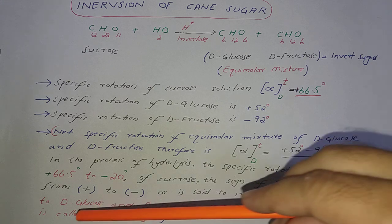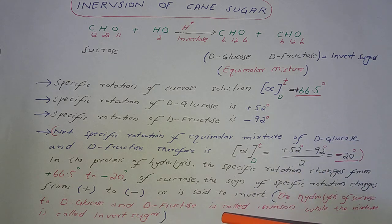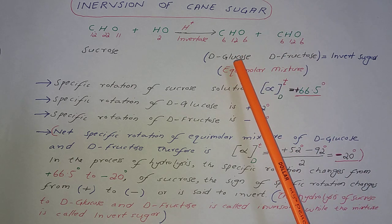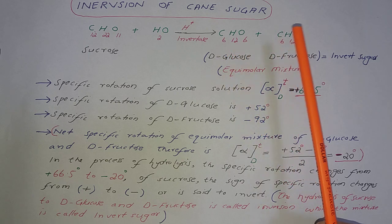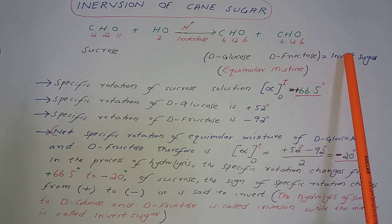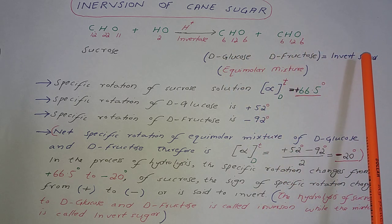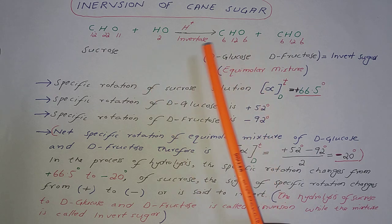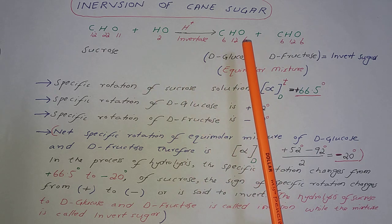So the hydrolysis of sacrose to D-glucose and D-fructose is called inversion, while the equimolar mixture is called invert sugar.